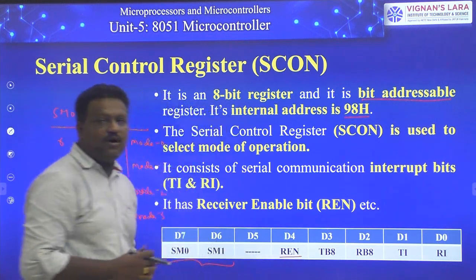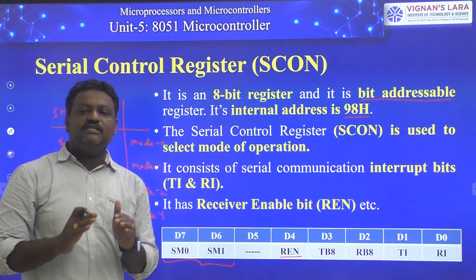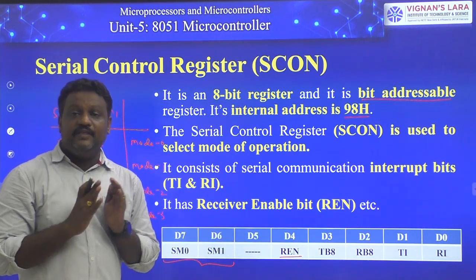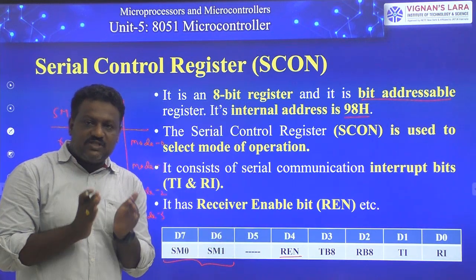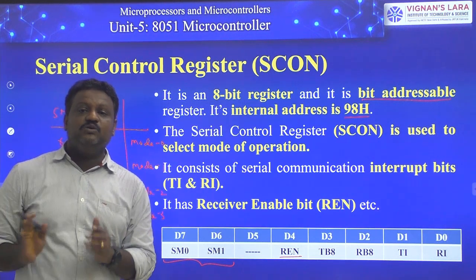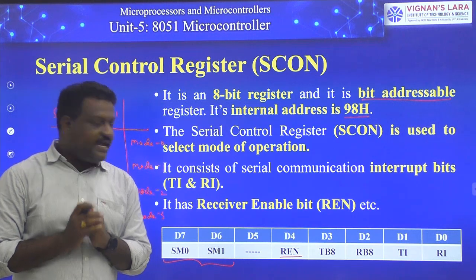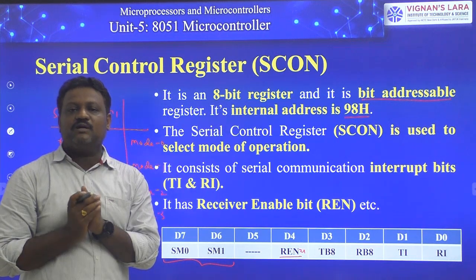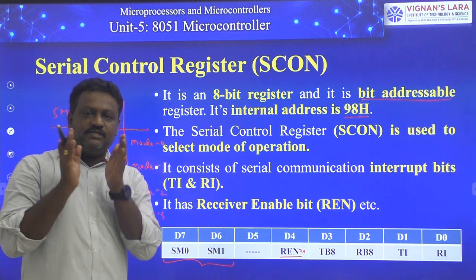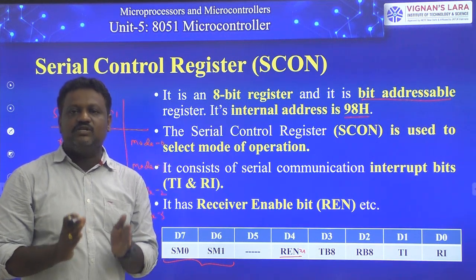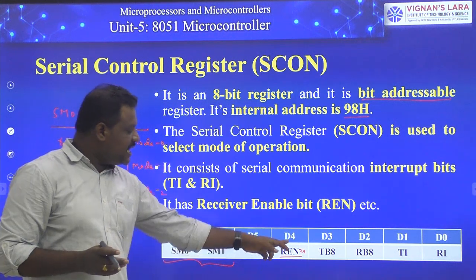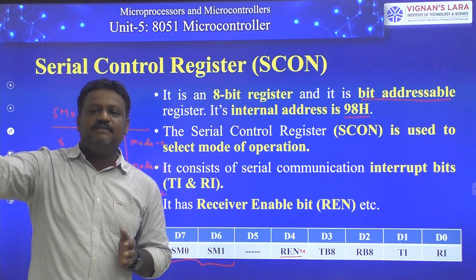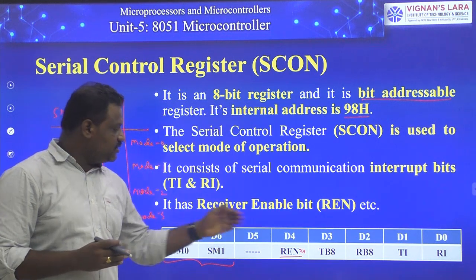Bit D4 of SCON is called REN — Receiver Enable. By setting this bit to 1, the serial port receiver section is enabled and ready to receive data from an external device via RXD. If REN equals 1, the receiver section is enabled. If REN equals 0, the receiver section is disabled and the 8051 cannot receive any data via RXD.